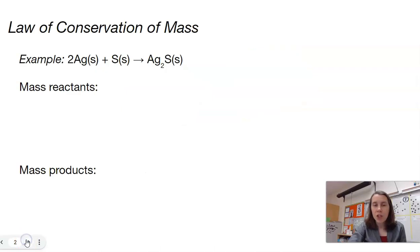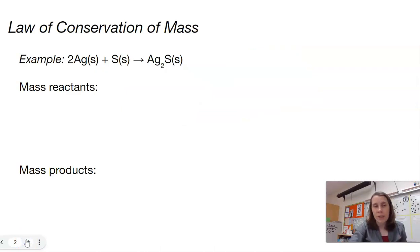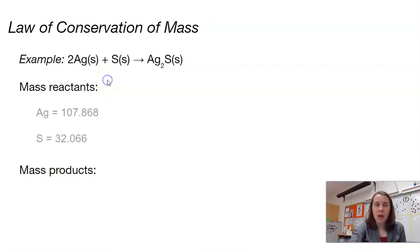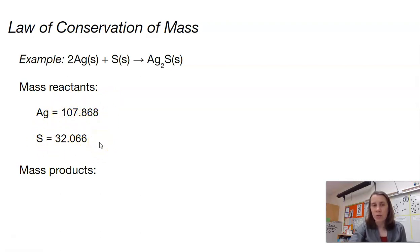Let's review why we balance equations and why these ratios exist, and it's all because of the law of conservation of mass. So let's say we have this equation: we have two silver atoms reacting with a sulfur atom to make Ag₂S, one molecule. If we add up the mass of our reactants, we know that silver from our periodic table is 107.868 grams per mole, and sulfur is 32.006.